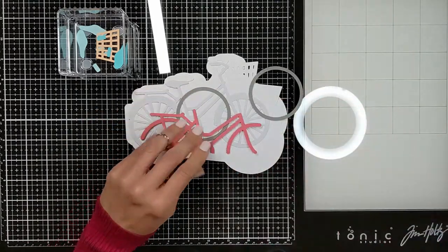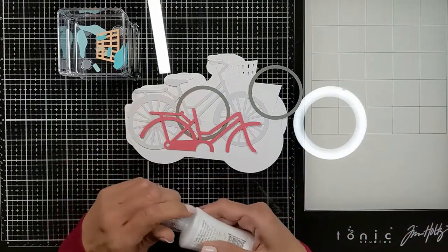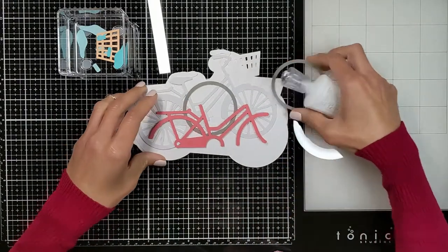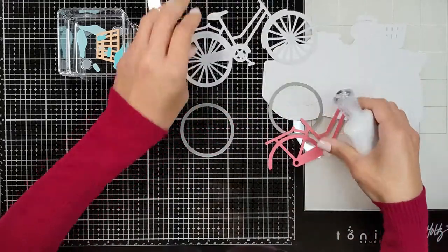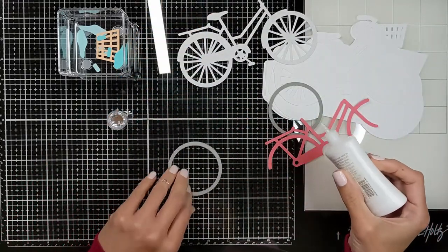I used my Cricut machine and I found this image of a bike with the pieces and I got them all cut using Lawn Fawn cardstock that I'm going to be linking down below along with all the materials and tools I'm going to be using today.